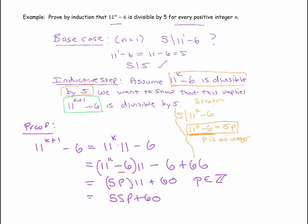And now we're basically done. This is 55p plus 60. Now, you've got to be very thorough, though, at this point. We're not done until we've established that 11 to the k plus 1 minus 6 is equal to 5 times an integer. So if I factor out a 5, I've got that's 11p plus 12.